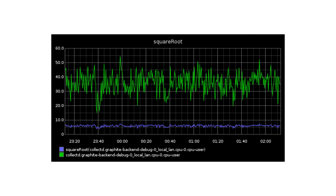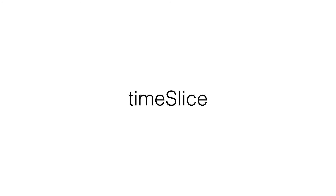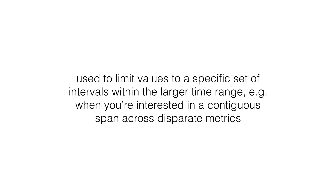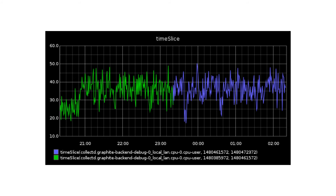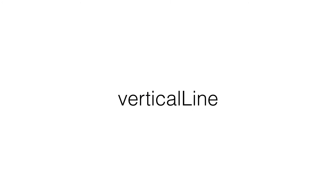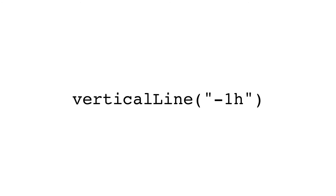Square root does square root. Time slice is cool — the use case here was an ISP who wanted to show the breakdown of an interface for a customer as it changed over a month. It basically allows you to do contiguous spans across disparate metrics. Vertical line makes a vertical line — you can do arbitrary vertical lines to your heart's content. Weighted average.